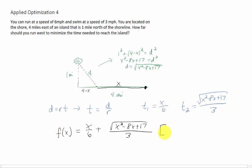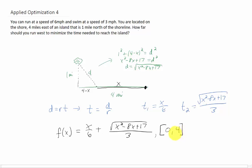We can establish endpoints for this function. The smallest value of x is 0, meaning you don't run at all and just swim straight to the island. The largest sensible value is x = 4, meaning you run all four miles down the shore and then swim straight across to minimize swimming distance. Running more than 4 miles doesn't make sense.